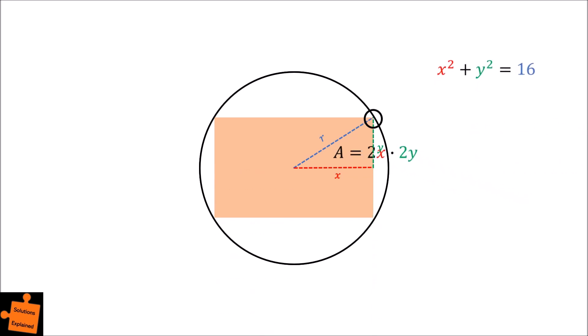If we move things out of the way and simplify a little, we obtain the area as equal to 4 times x times y. Now we have two separate equations which are both functions of x and y. Let's try and eliminate y to obtain the area purely as a function of x.